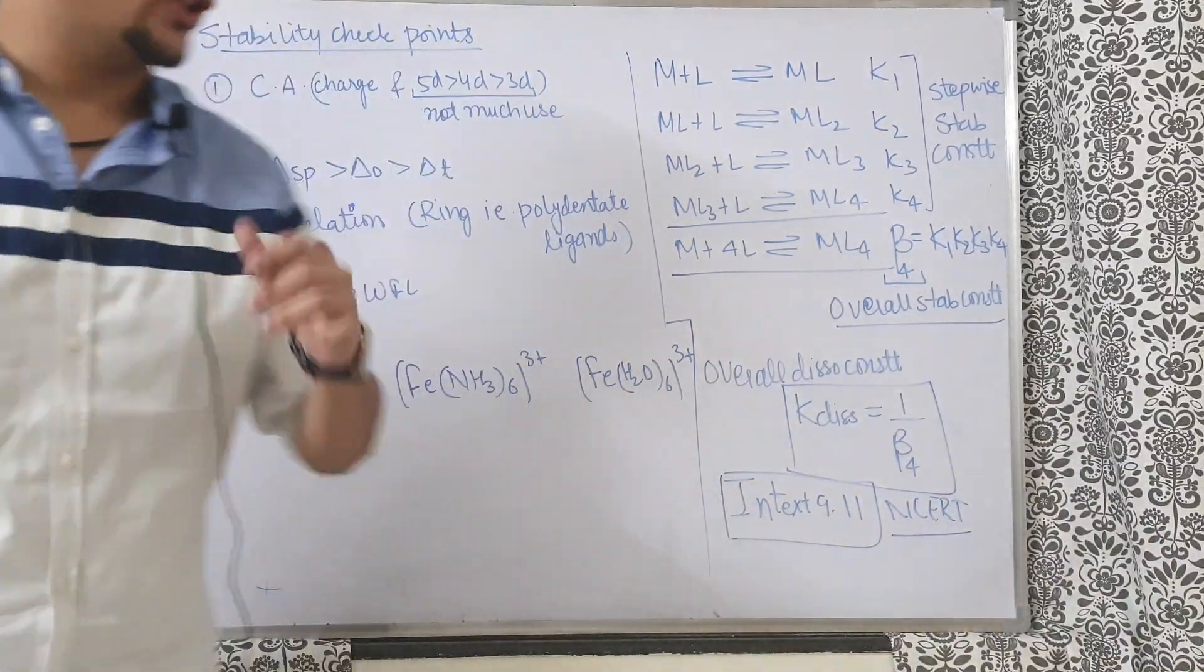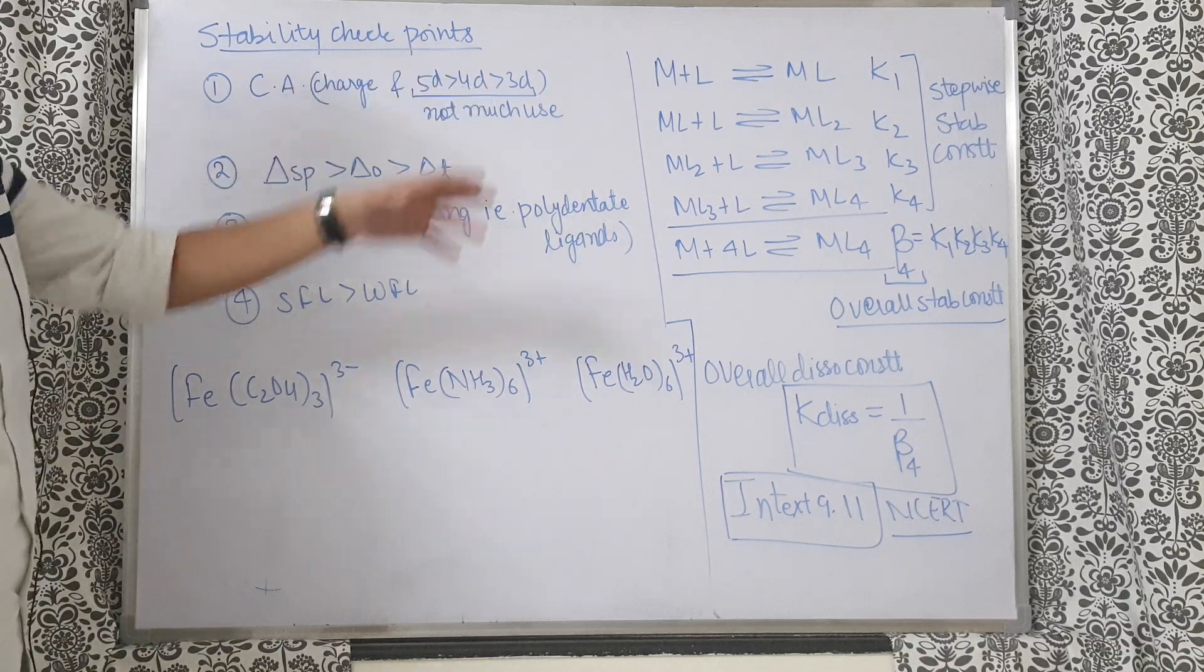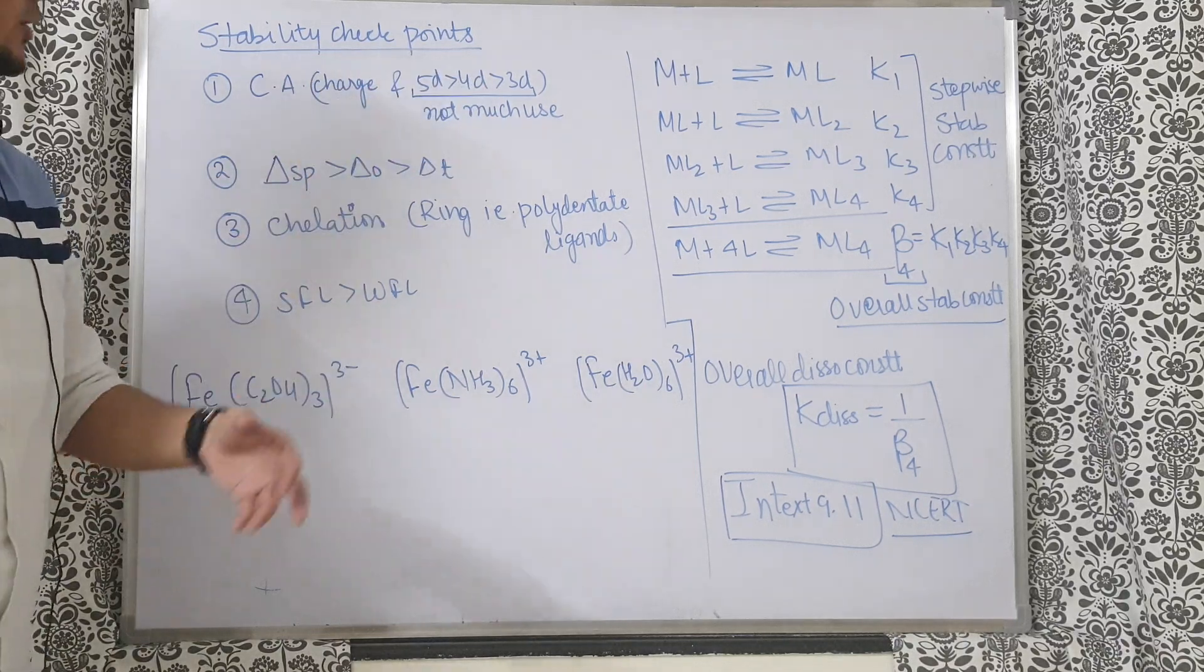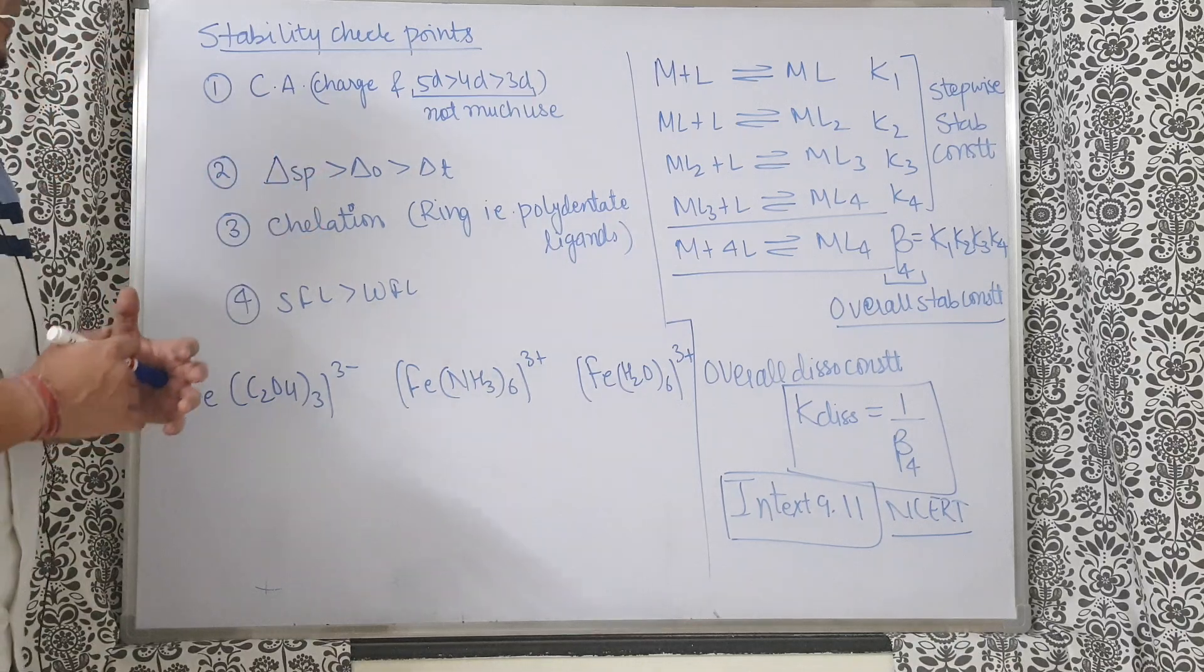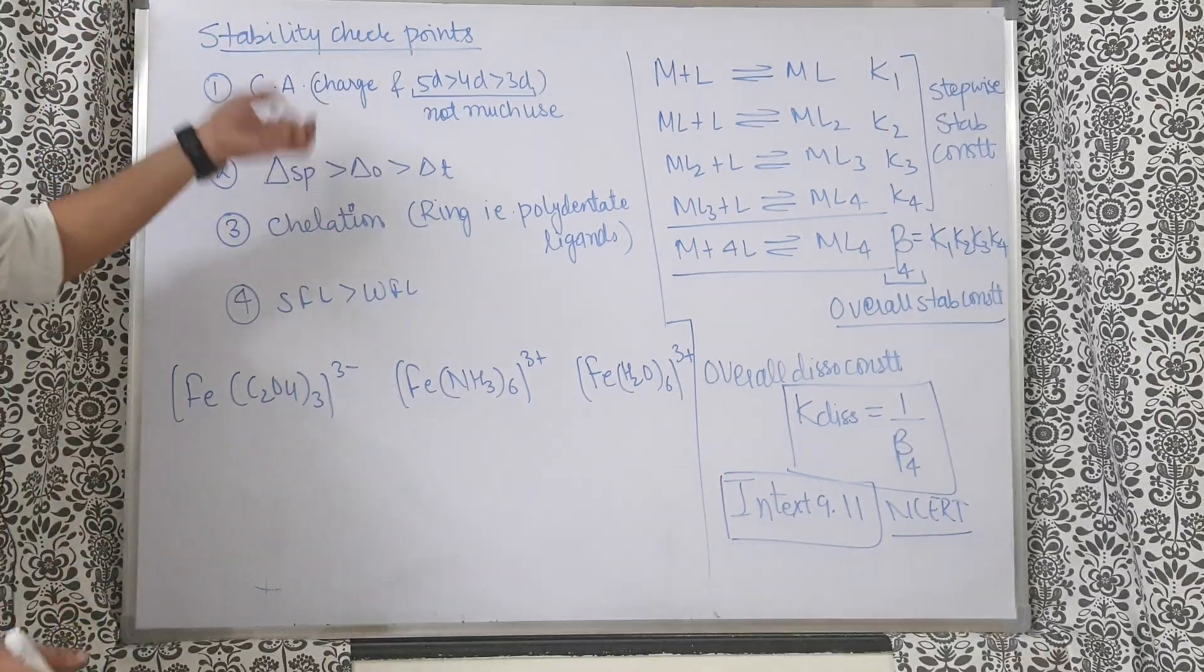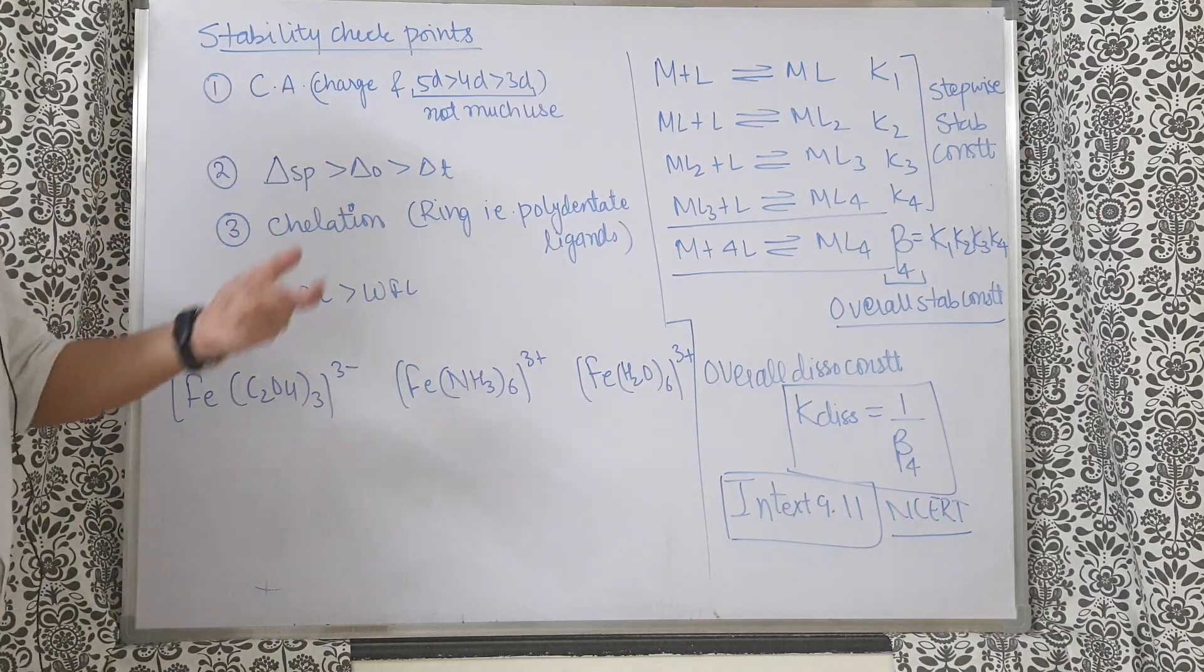First thing you should always check is the central atom. More charge means more stable. 5d more than 4d more than 3d is also a logic we can use, but it's not much used in NEET. More charge more stable is one thing. Second, here also some exception comes with CN minus and CO.